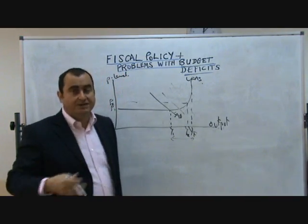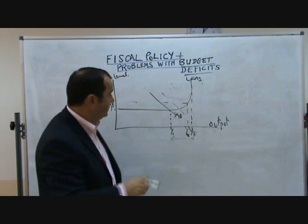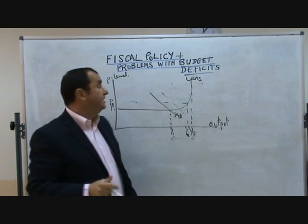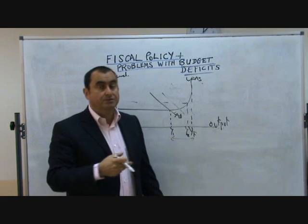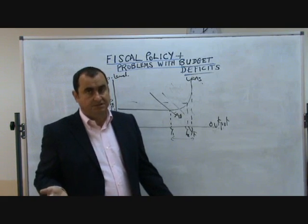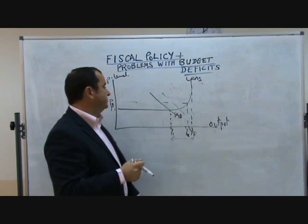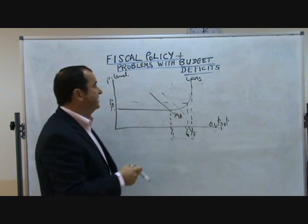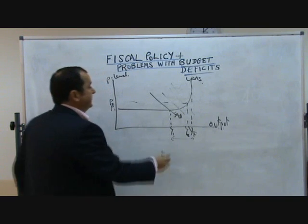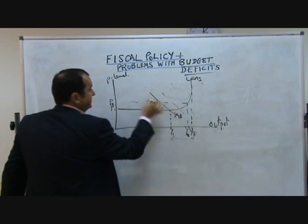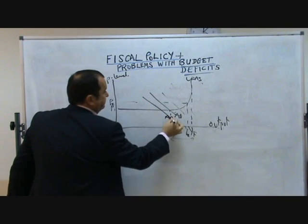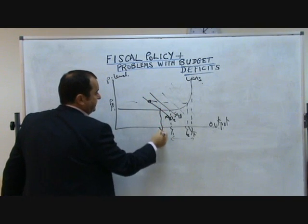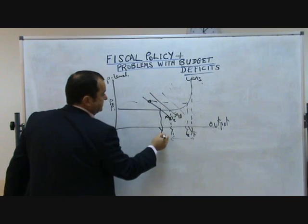But what governments are doing is quite the opposite. They are tightening their fiscal position — raising tax, which reduces people's ability to spend, and cutting government spending, which has a negative multiplier effect. This can even have the danger of throwing aggregate demand further backwards, reducing aggregate demand, and perhaps worsening the problem.